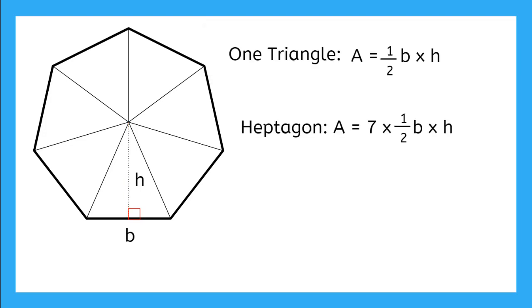So now that I have the height of my triangles, I know the area of my heptagon is going to be 7 times the area of one triangle. But do you notice something about the base of the triangle, B? It is the same as the side length of our heptagon. And the side length times the number of sides, 7, is the perimeter of the heptagon.